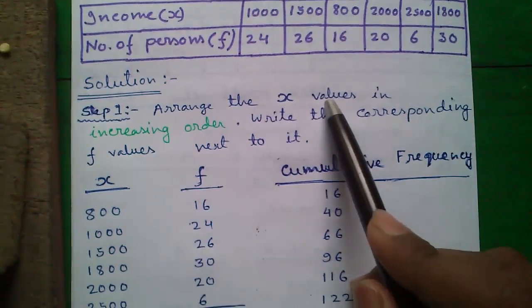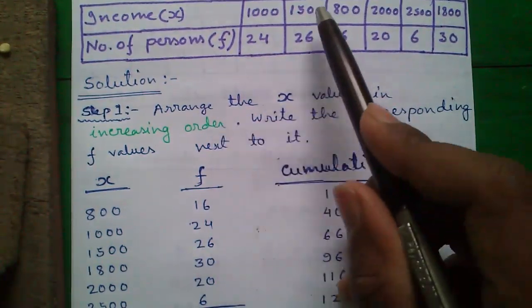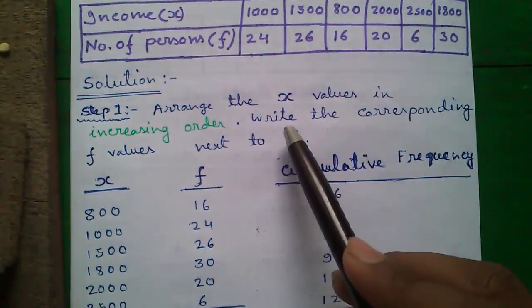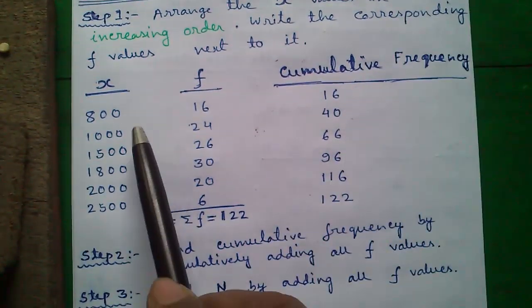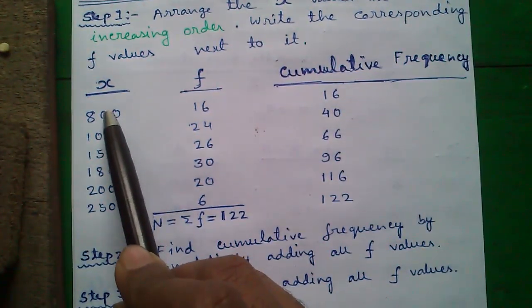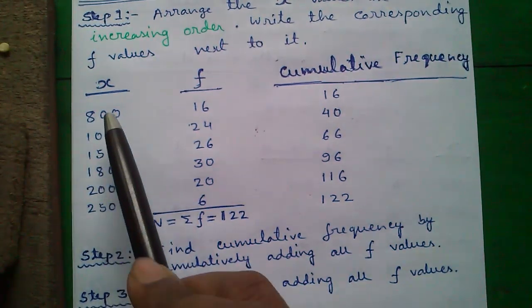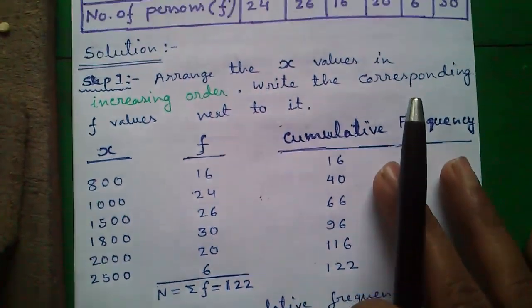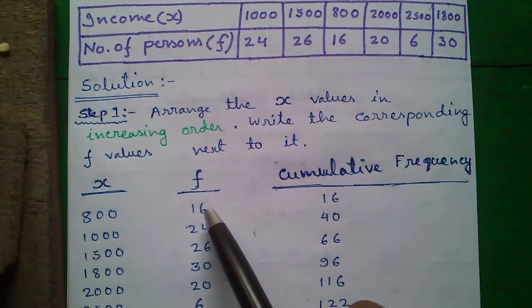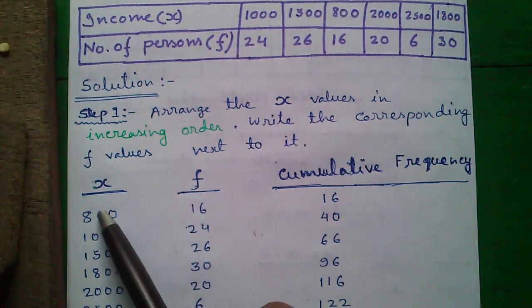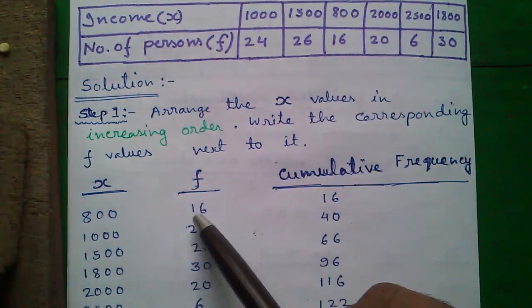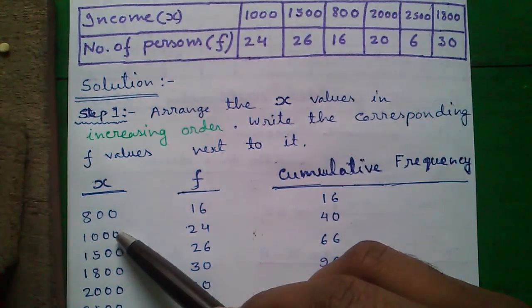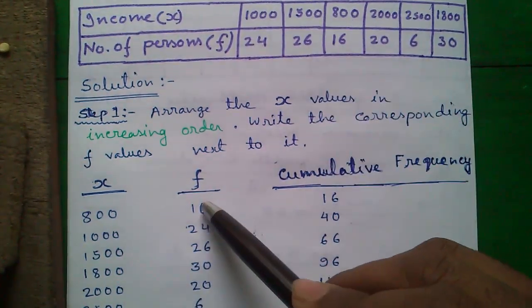Step 1. Arrange the X values in increasing order. Here they are in random order. And write the corresponding F values next to it. So here is the table. Write the X values in increasing order column wise. 800, 1000 and write the corresponding F values next to it. So F value corresponding to 800 is 16, written next to it. F value corresponding to 1000 is 24, written next to it and so on.